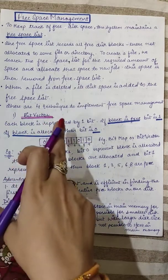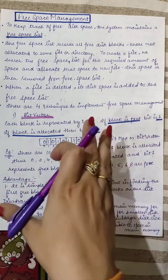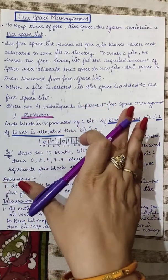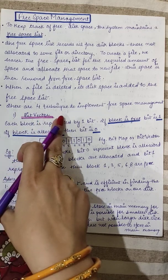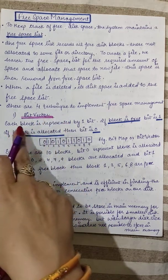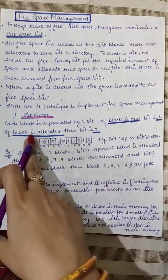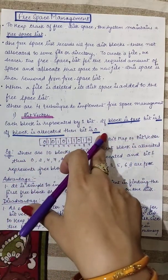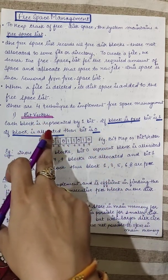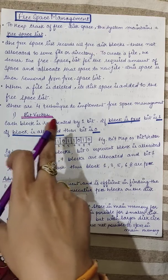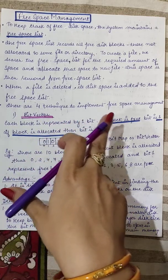There are basically four techniques which can be used to implement free space management — how the operating system will manage these free spaces on the disk. The first is the bit vector, also called a bitmap. Each block is represented by one bit: if the block is free, the bit is one; if the block is allocated, the bit is zero. So if the bit is set to one, the block is free and not allocated.